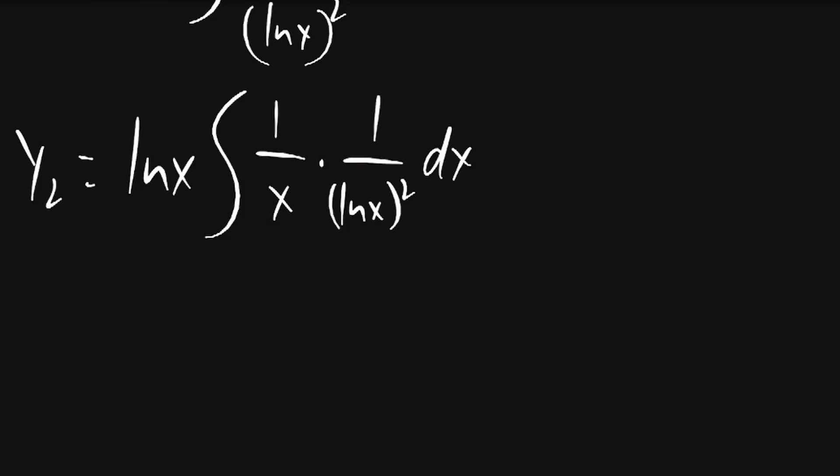Now we can use u substitution to solve for this. u will be equal to lnx, so du is going to be equal to 1 over x dx.